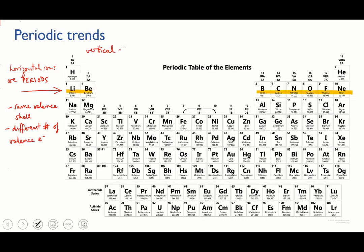Vertical columns on the table are known as groups. Each atom in a group will have a different electron level as its valence shell, but they'll have the same number of valence electrons in that shell.